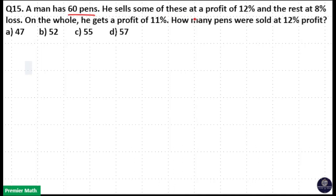A man has 60 pens. He sells some of these at a profit of 12% and the rest at 8% loss. On the whole he gets a profit of 11%. How many pens were sold at 12% profit?